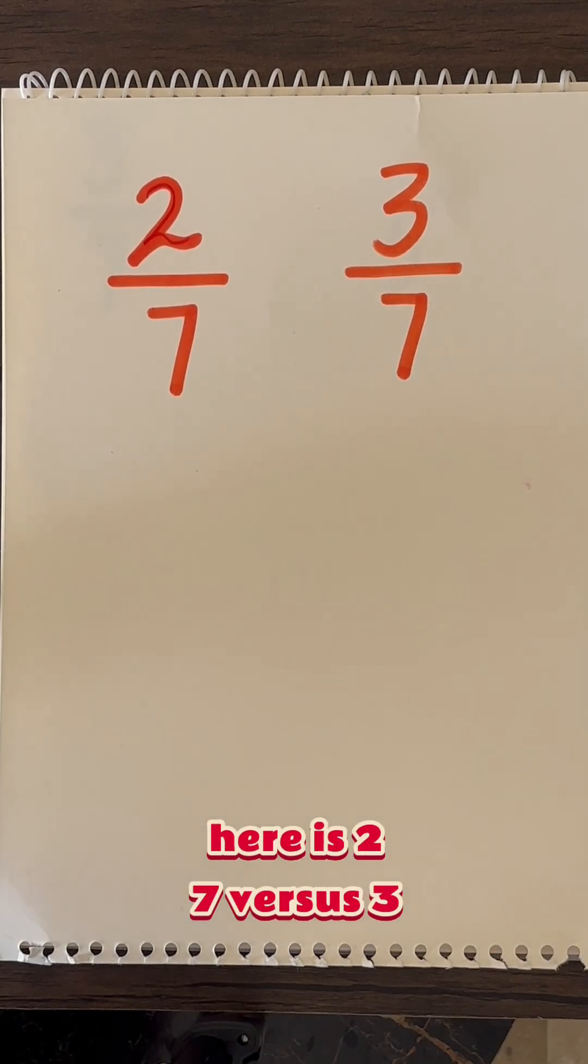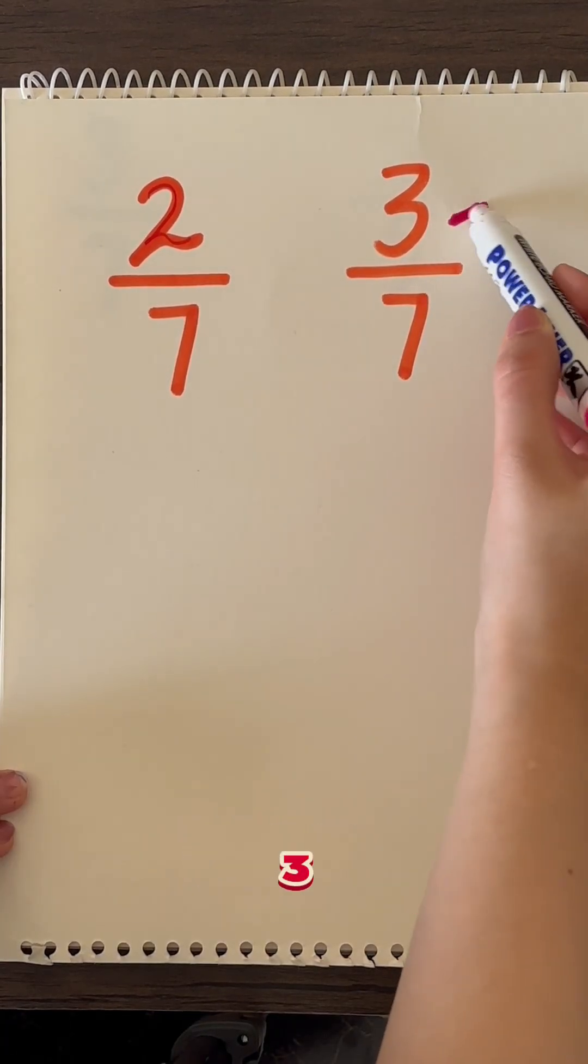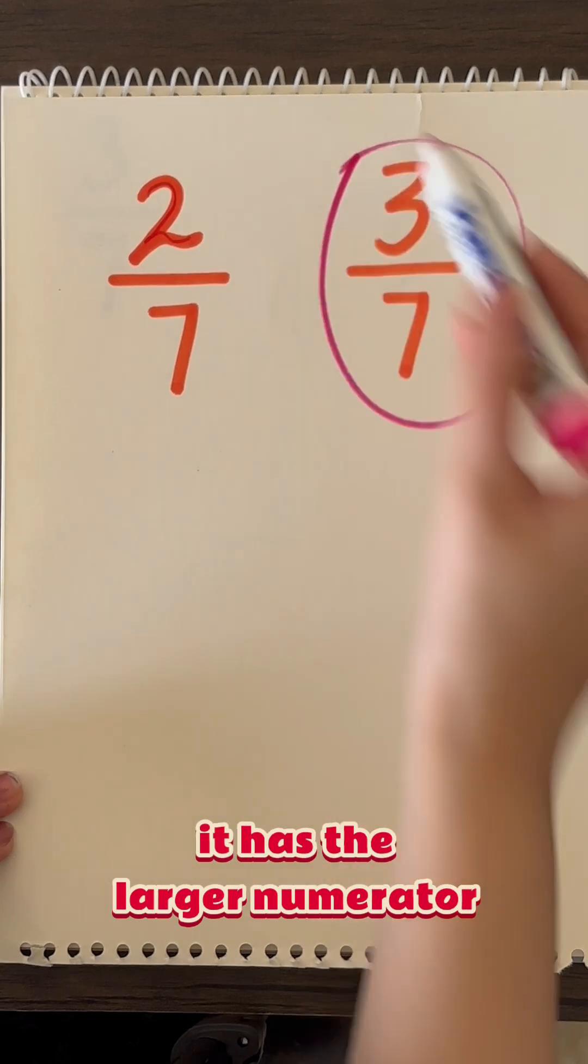Here is 2/7 versus 3/7. It should be obvious that 3/7 is the larger fraction because it has the larger numerator.